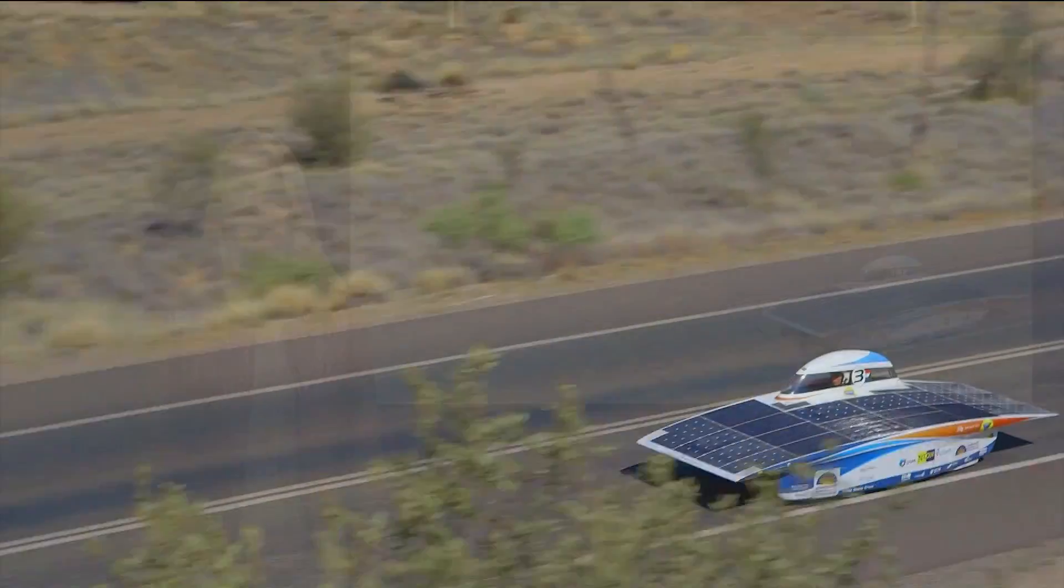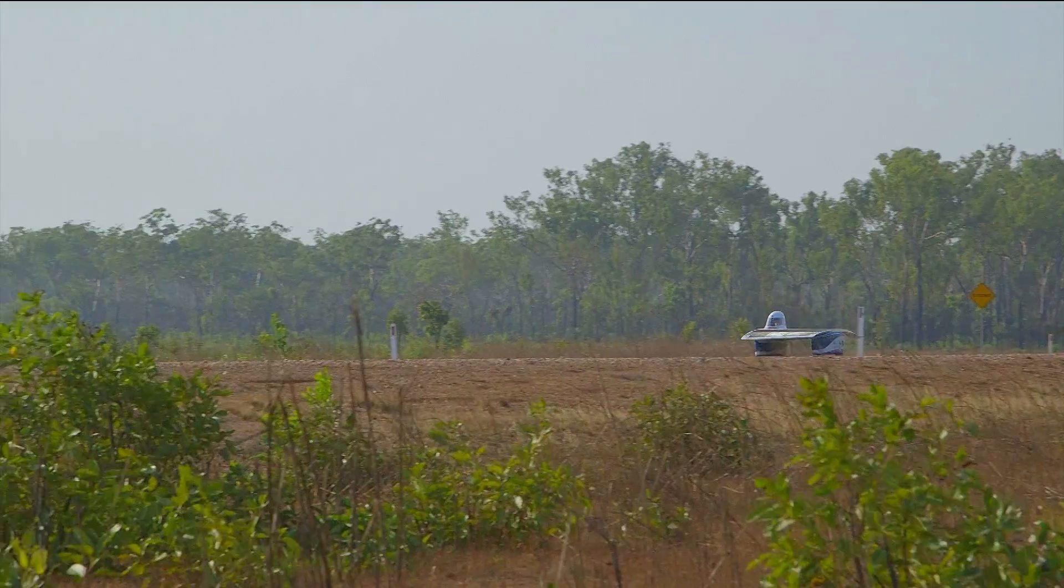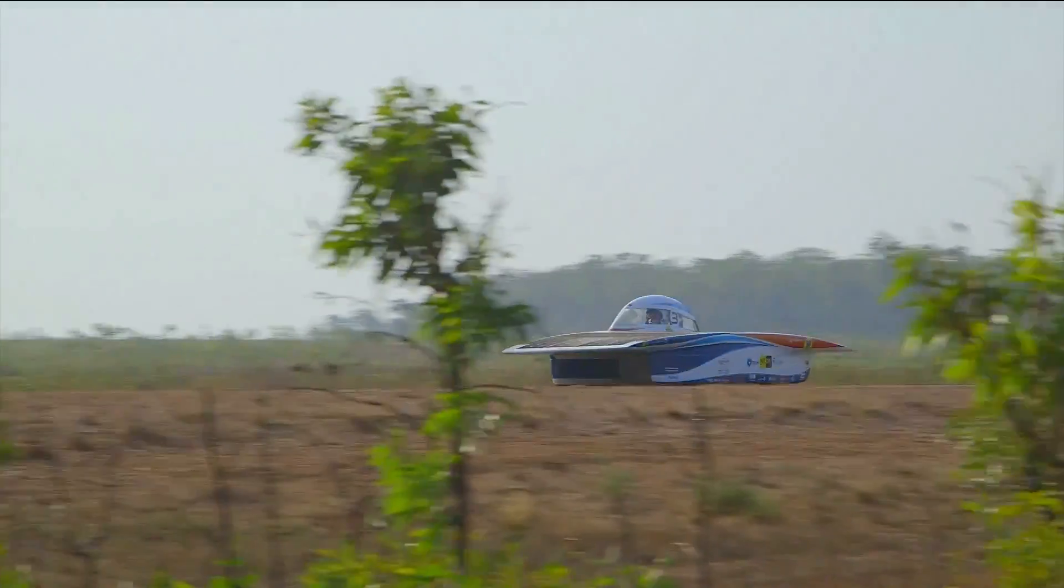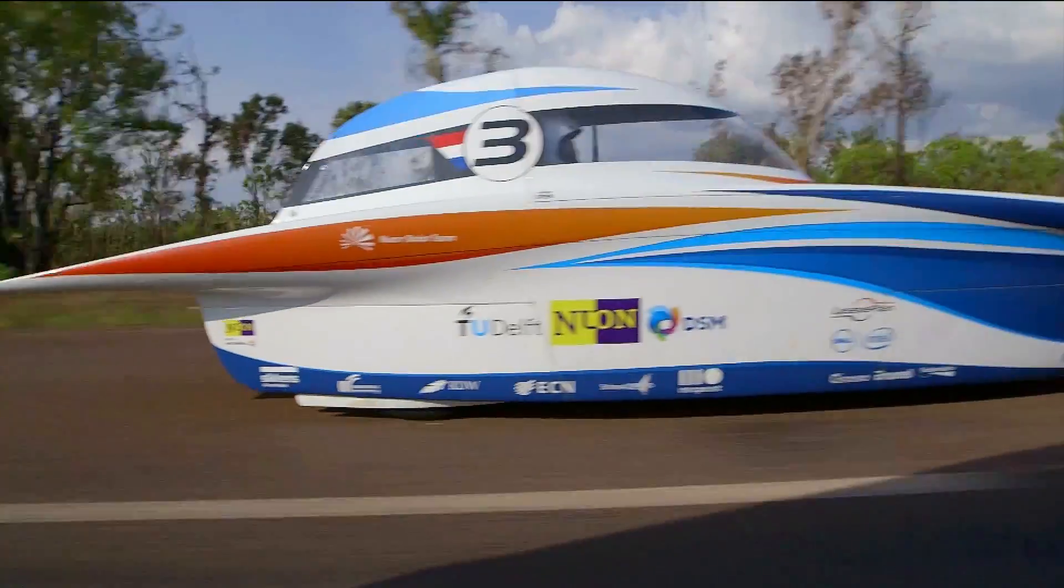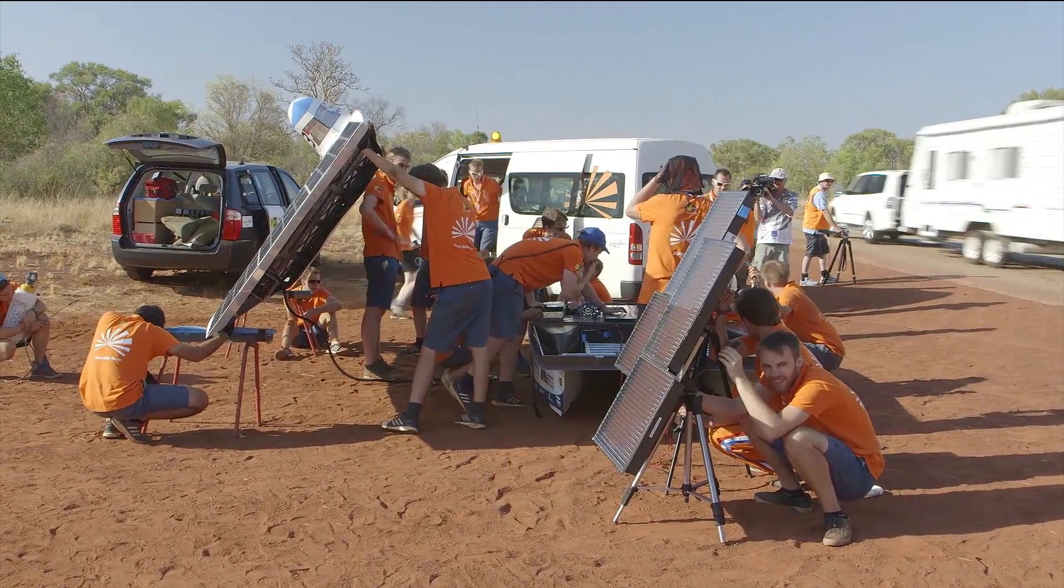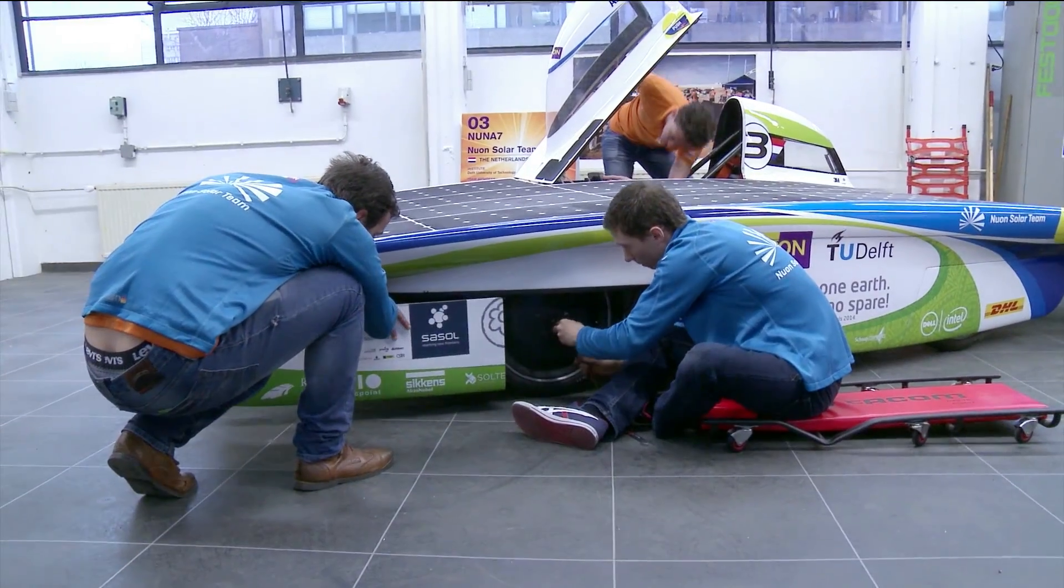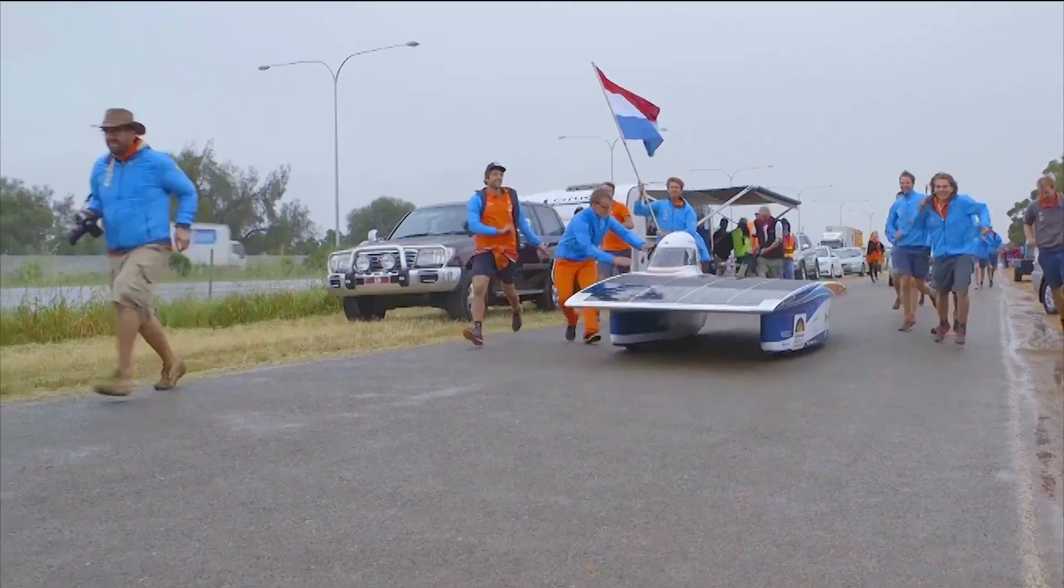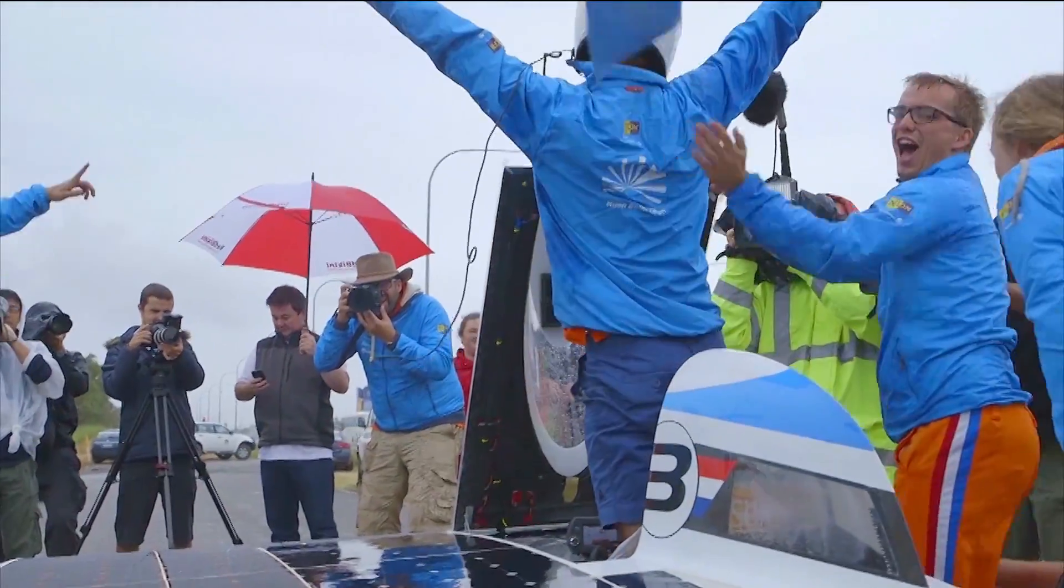The World Solar Challenge, a race for cars using only solar power to cross Australia. Racing 3,000 kilometers from Darwin to Adelaide, students of the Delft University of Technology built the NUNA 7 and won this world championship of solar cars.